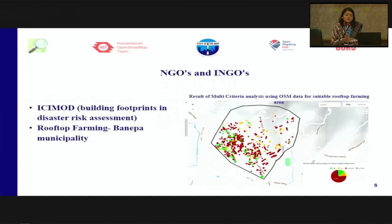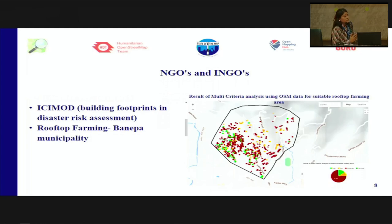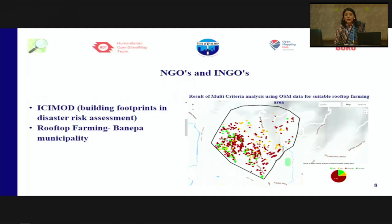ICIMOD, the Integrated Centre for Mountain Development, is using building footprints from OSM for disaster risk assessment. There is also a project showing a map used to do suitability analysis for rooftop farming in one of the municipalities of Nepal. The green-colored buildings are identified as highly suitable for rooftop farming in city areas where there is no open space available for farming.